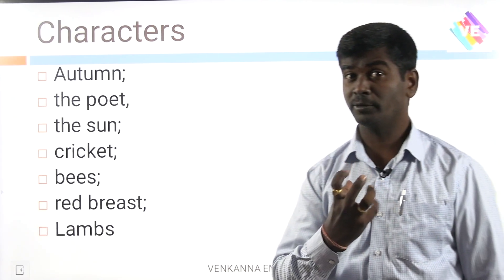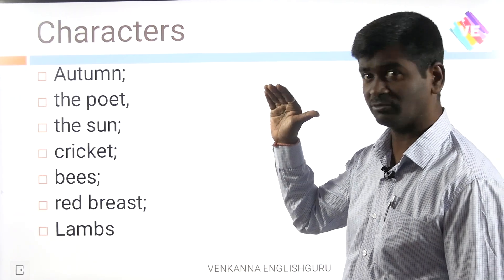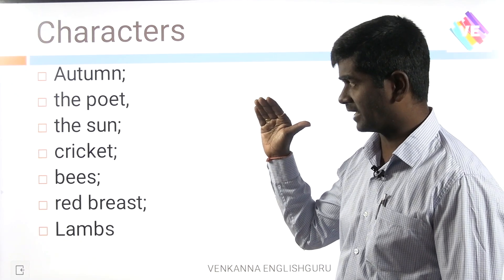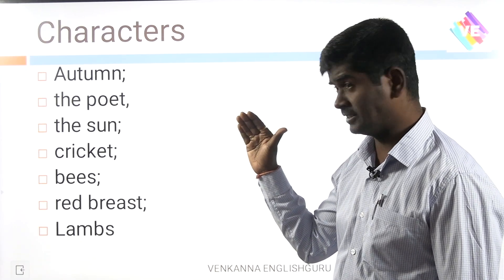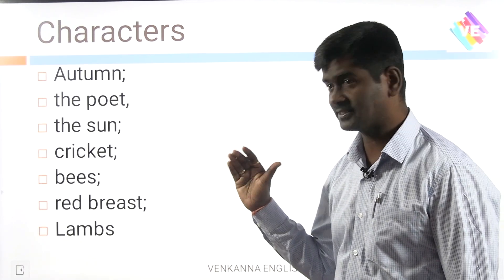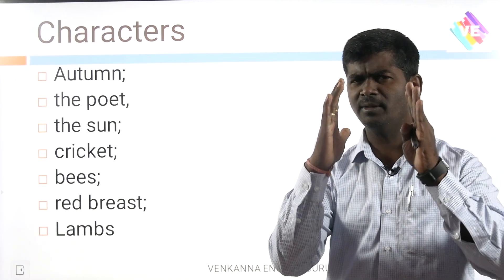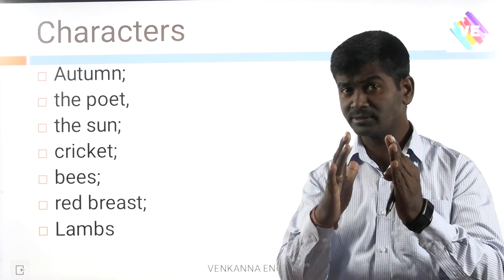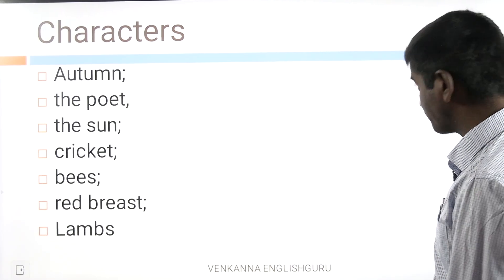Who are the important characters of the poem? Autumn, the poet himself, the sun, the cricket, insects, bees, the redbreast, and lambs — all these are the major characters and the only characters in the poem.